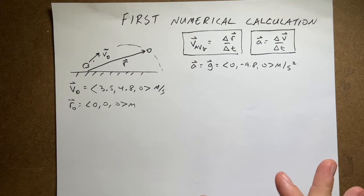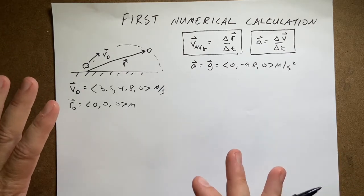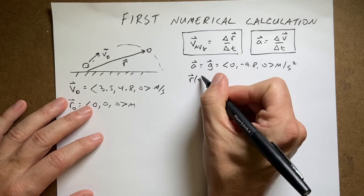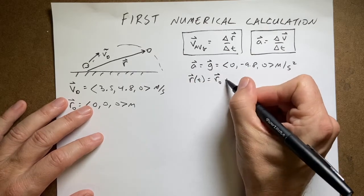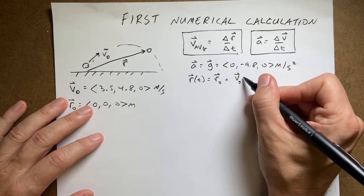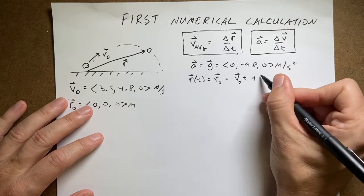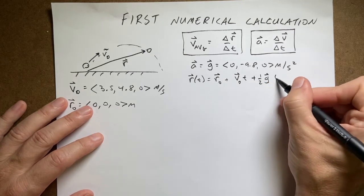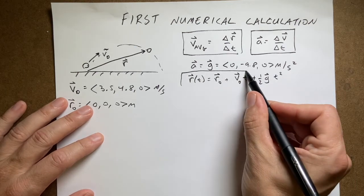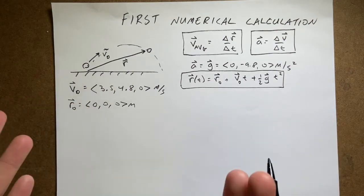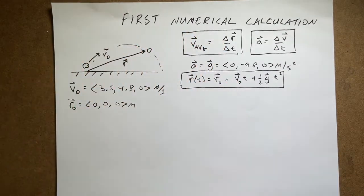You can solve this problem analytically — you can get an equation for this. The equation is r(t) = r0 + v0*t + (1/2)*g*t², where g is a vector, assuming it starts at t=0. I'll derive this equation in another video. We can get an algebraic expression without even needing to know the initial velocities.